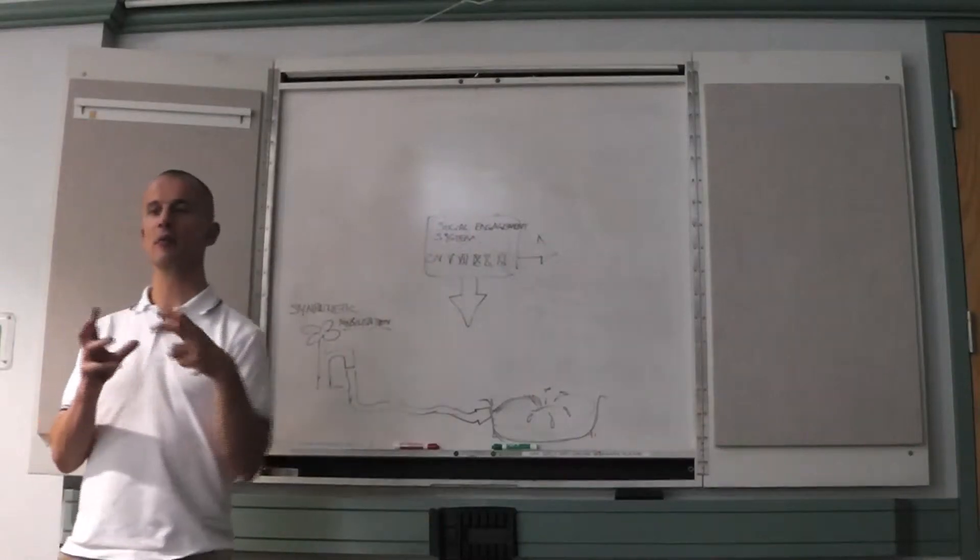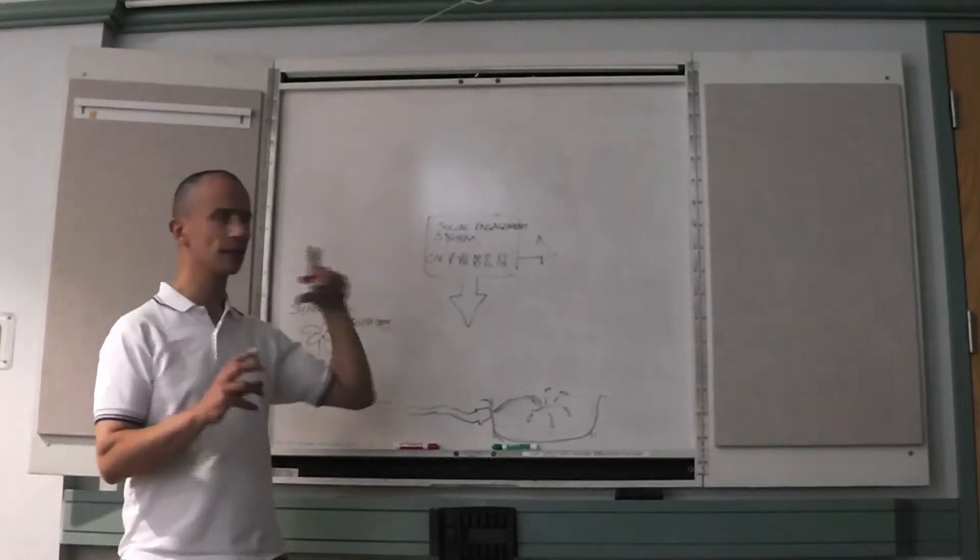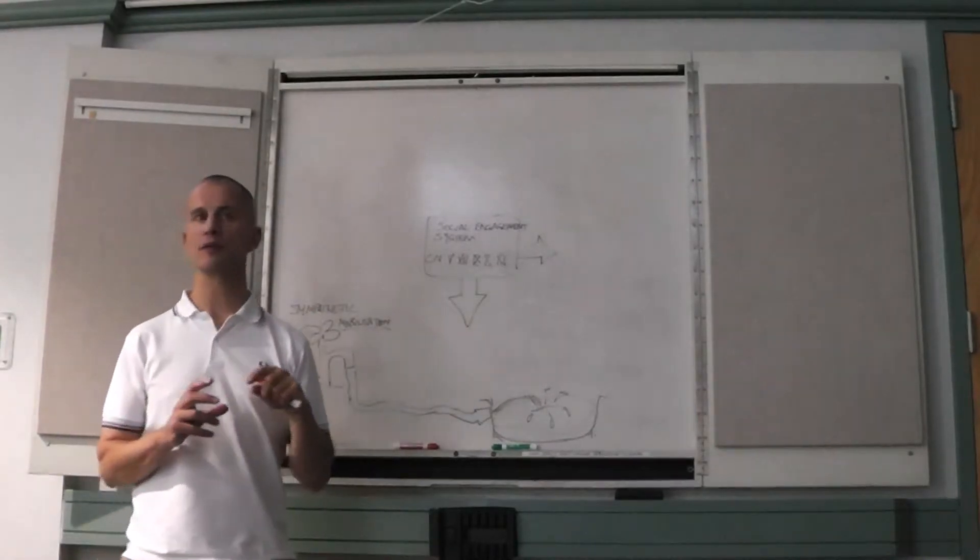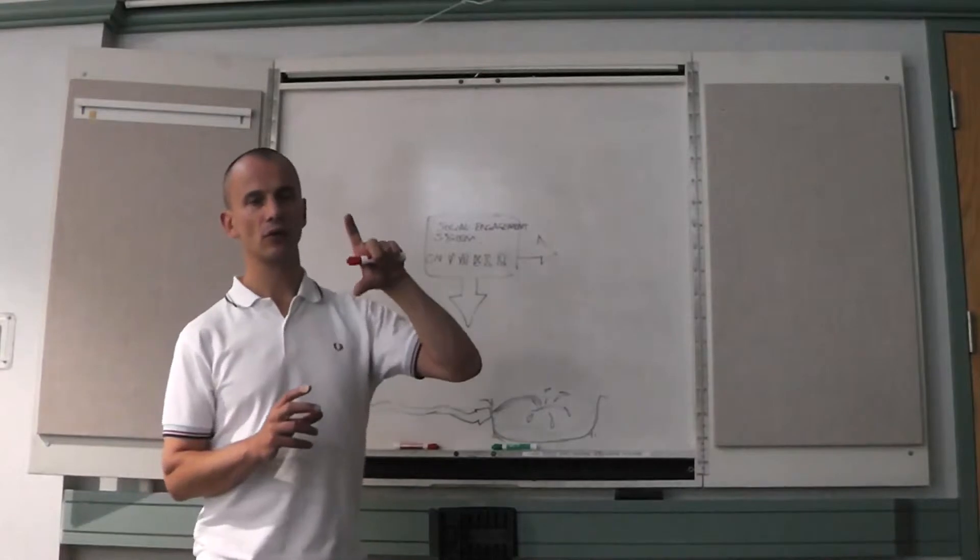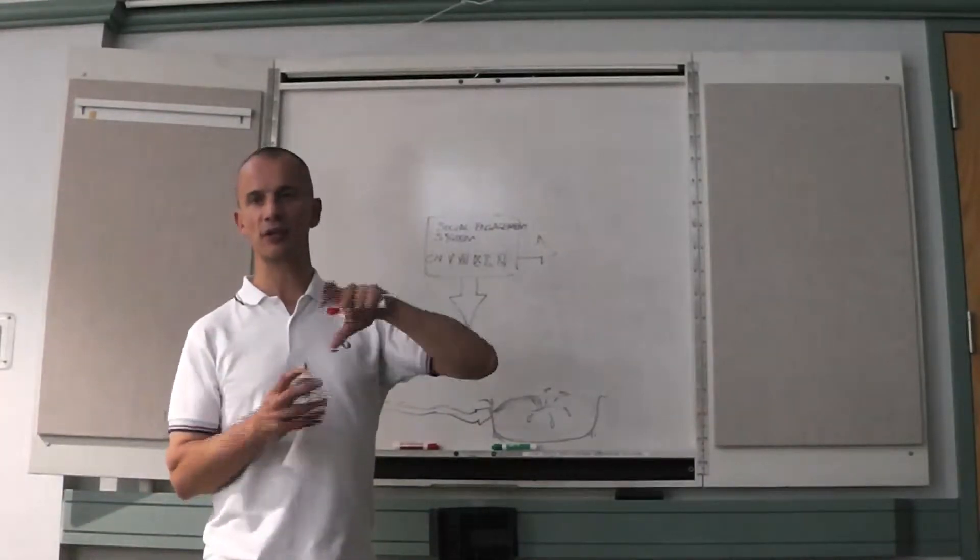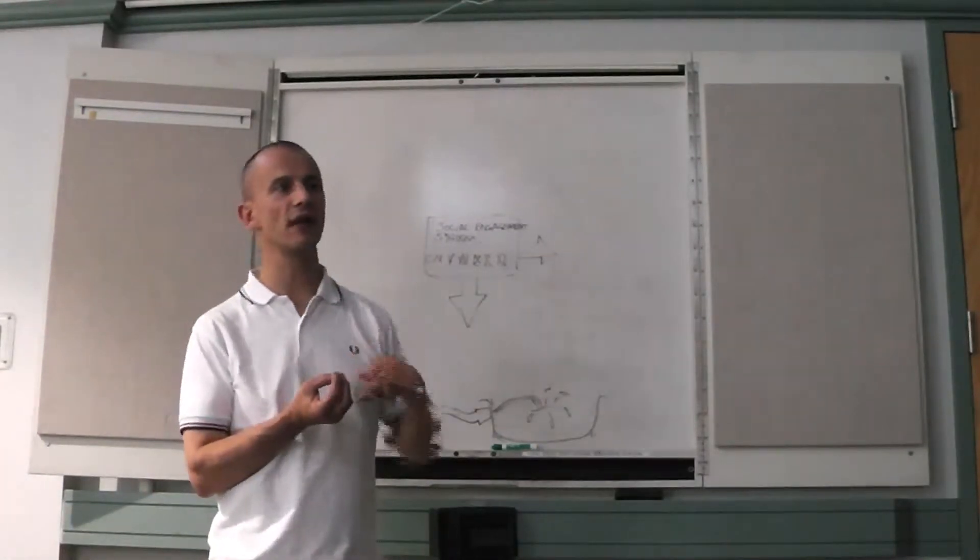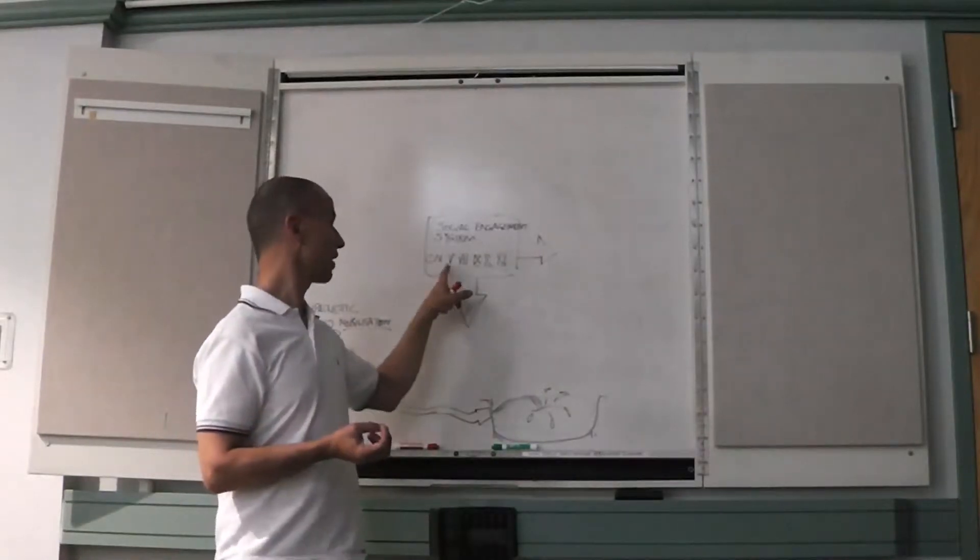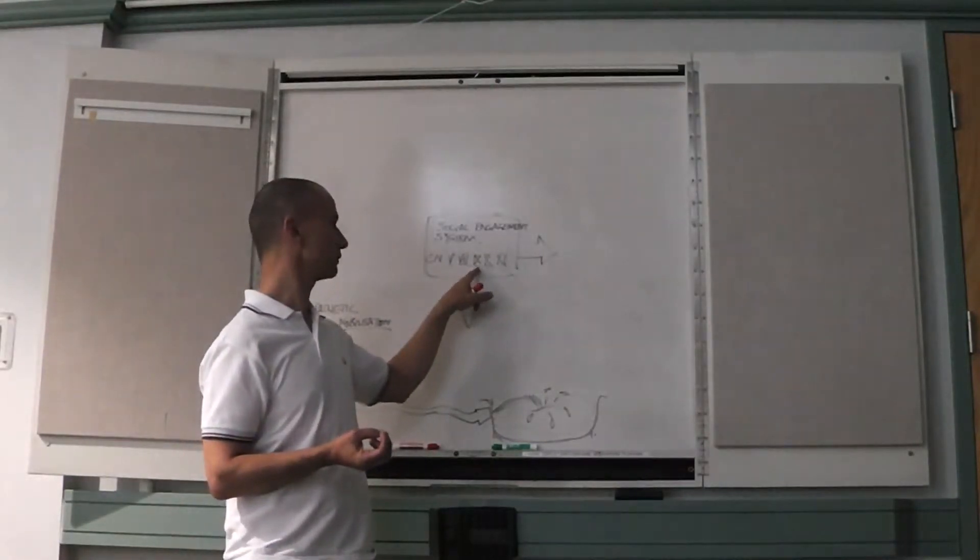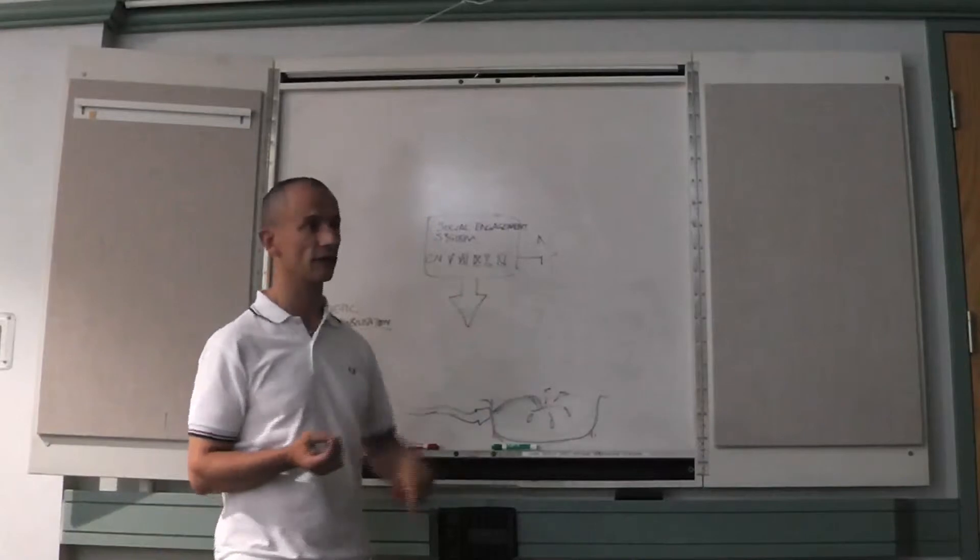The social engagement system is a particular set of cranial nerves that have the same location. They're very close together in the brain stem. It's cranial nerves 5, 7, 9, 10 and 11.